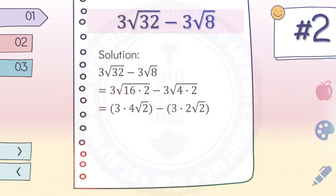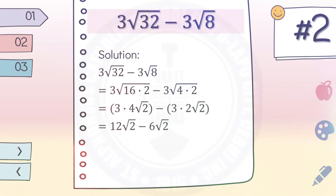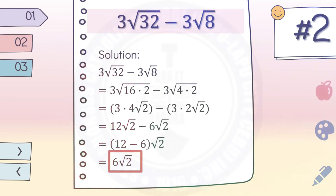Next, find the square root of 16, which is four, and the square root of four, which is two. Combine: three times four is twelve, and three times two is six. That gives twelve square root of two minus six square root of two. Since both terms now share the same index and radicand, they are similar. So: twelve minus six equals six, giving a final answer of six square root of two.